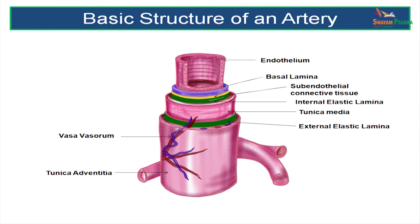Here we can see the basic structure of an artery. The innermost layer is an endothelium made up of a single layer of flattened or squamous cells resting on the basement membrane, also called the basal lamina. The yellow tissue here is the subendothelial connective tissue. The green coloured layer is the internal elastic lamina. These four layers — endothelium, basal lamina, subendothelial connective tissue and internal elastic lamina — form the tunica intima.